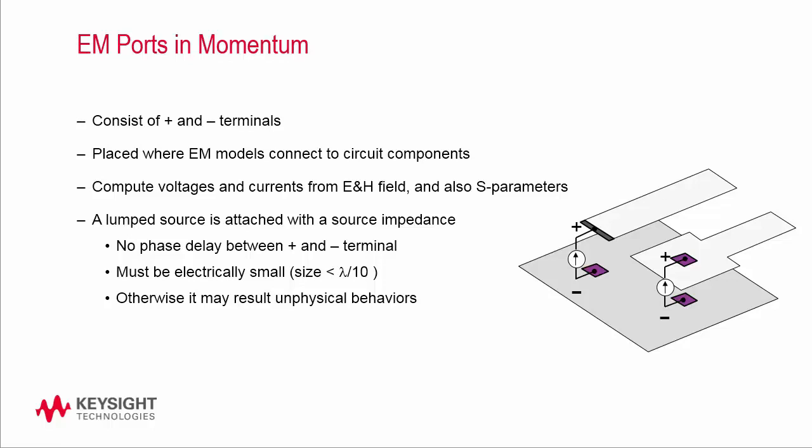A lumped source is attached between the plus and minus terminals with a source impedance. Here, lumped means there is no phase delay between the plus and minus terminals. In order to hold this assumption true, the port size must be electrically small in length, width, and area — for example, less than one tenth of the wavelength. Otherwise, you may start to see some unphysical behaviors, such as gain in the results.